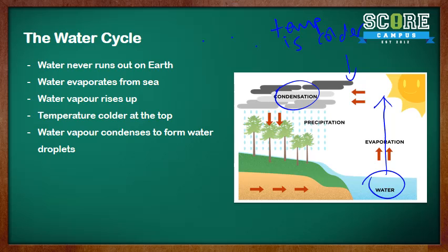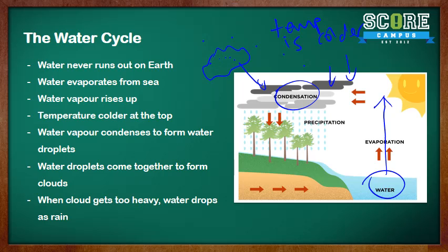The droplets of water come together and form clouds, as you can see here. When these clouds get too heavy, which are the darker clouds, the water drops as rain, which is the process of precipitation.